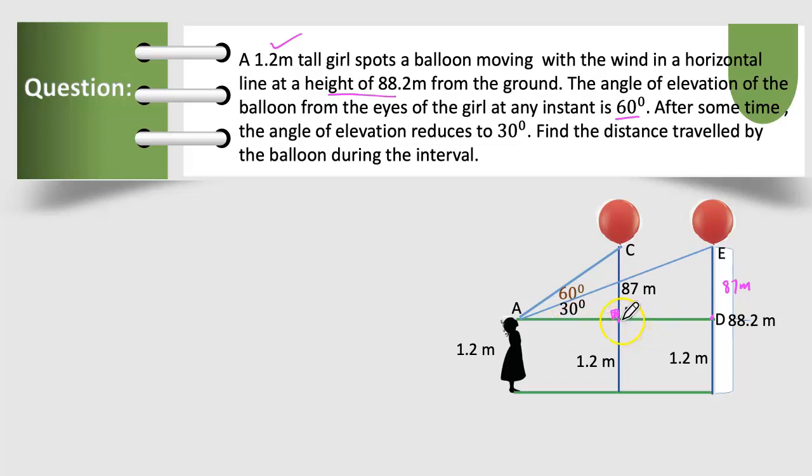We have to find the distance from B to D. So let's use tan 60°. So we will get BC by AB. So we will find out the length of AB. Then we will apply tan 30°. So we get DE by AD. From there we can find out length of AD.